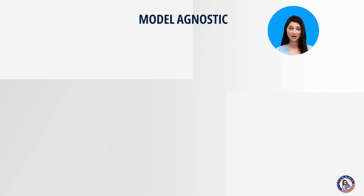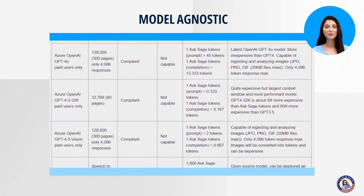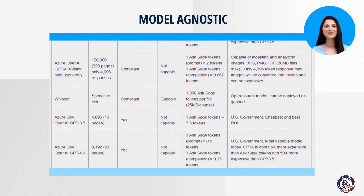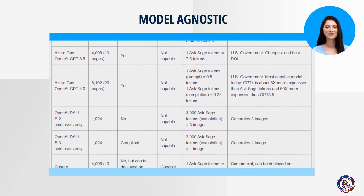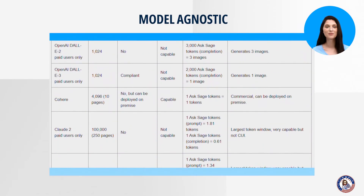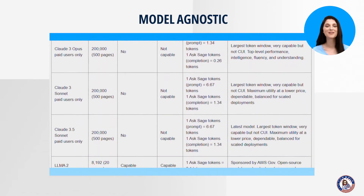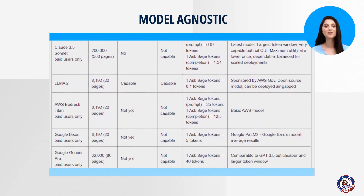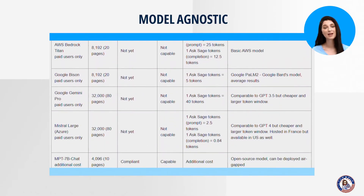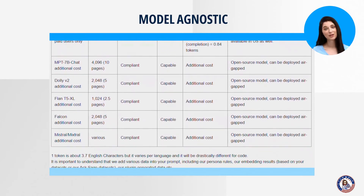2. Model Agnostic. We support over 150 large language models, including those from Google, Anthropic, Mistral, Azure OpenAI, open-source models, and many more. This allows you to experiment and find what works best for your needs.